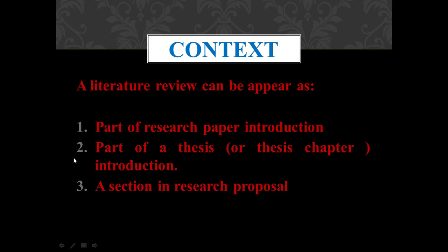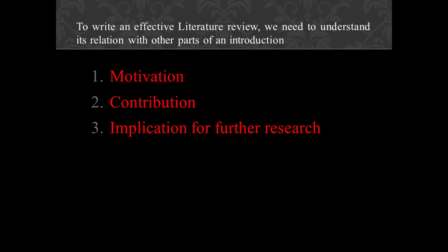Regarding context, a literature review can appear as part of a research paper introduction, part of a thesis or thesis chapter introduction, or a section in a research proposal. To write an effective literature review, we need to understand its relation with other parts of an introduction, such as motivation, contribution, and implication for further research. By motivation, I mean the overall motivation to study a particular set of problems — it can include a few citations of a survey, a book, or some authoritative general references, or a research question or thesis statement.